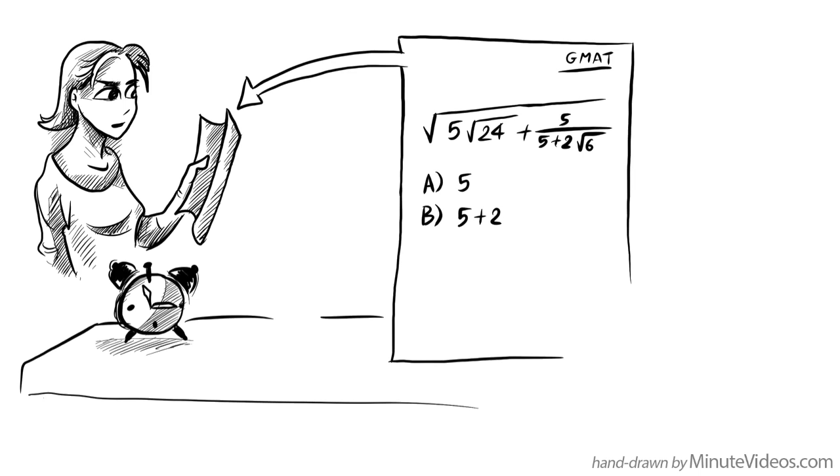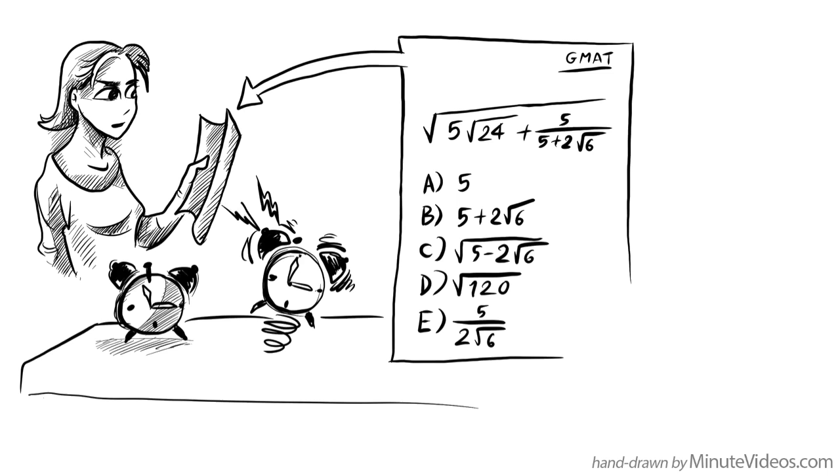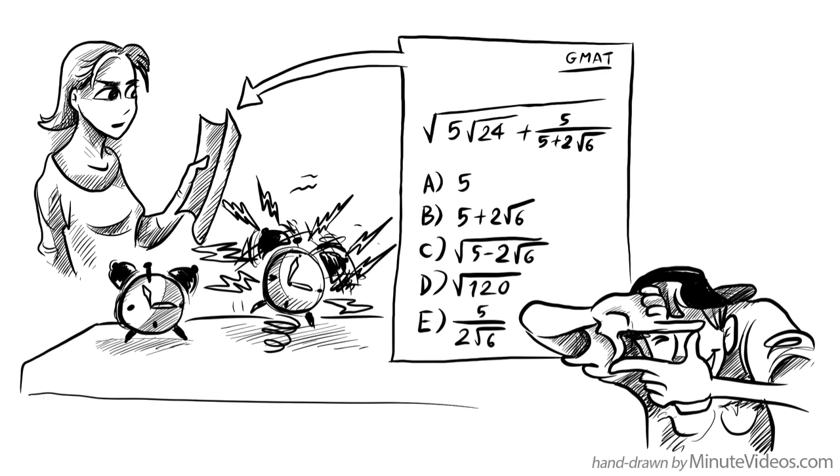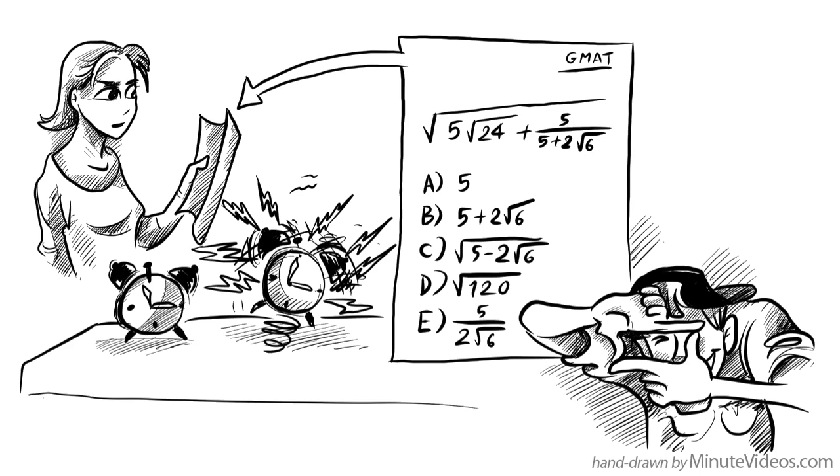Then you're given five multiple choice answers: A, B, C, D or E. If we would try to solve it, we would probably run out of time. Ballparking is now the only option. You can try it on your own, or do it with us.